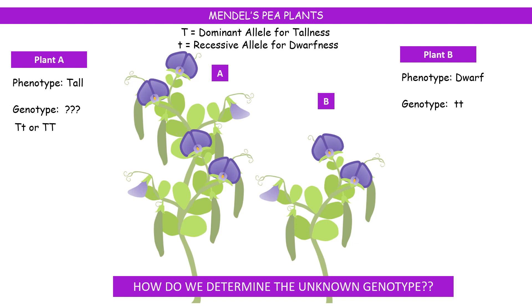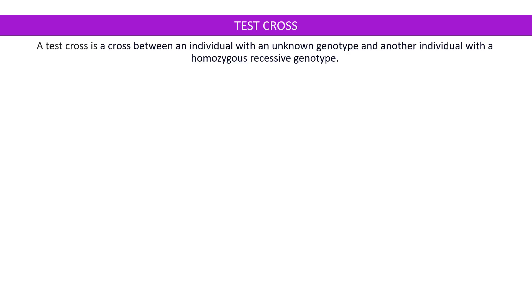Now how do we determine the exact genotype of plant A? This is where a test cross comes into play. A test cross is a cross between an organism whose genotype is unknown and an organism which displays a recessive phenotype — that means it has a homozygous recessive genotype. The intention is to find out the unknown genotype of the plant displaying the dominant phenotype.